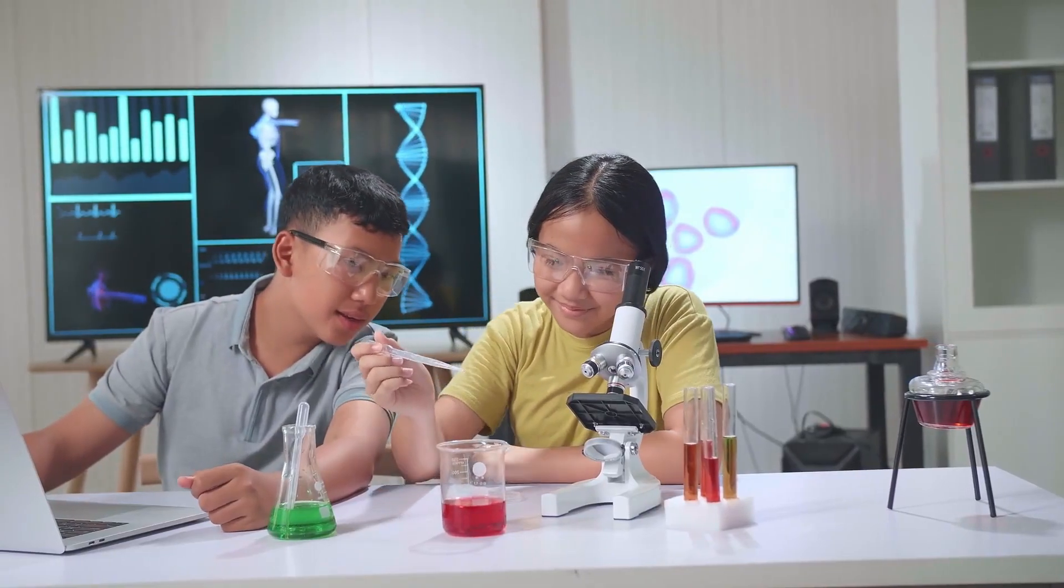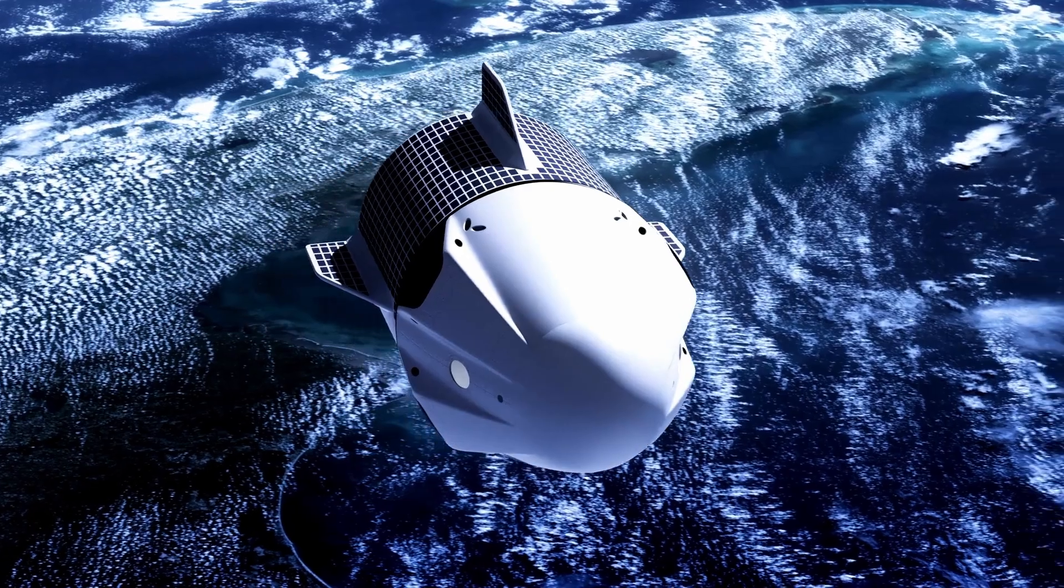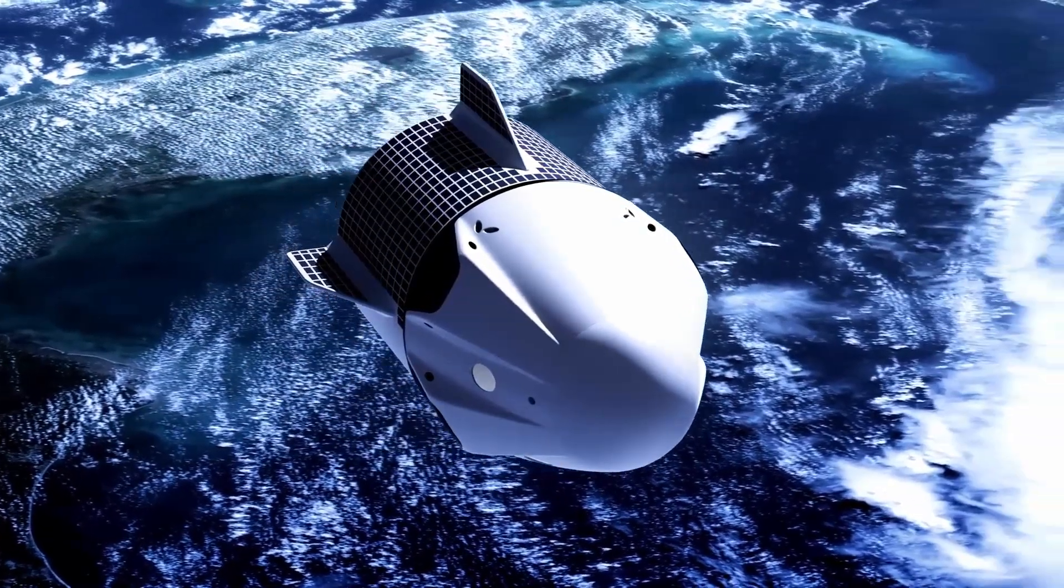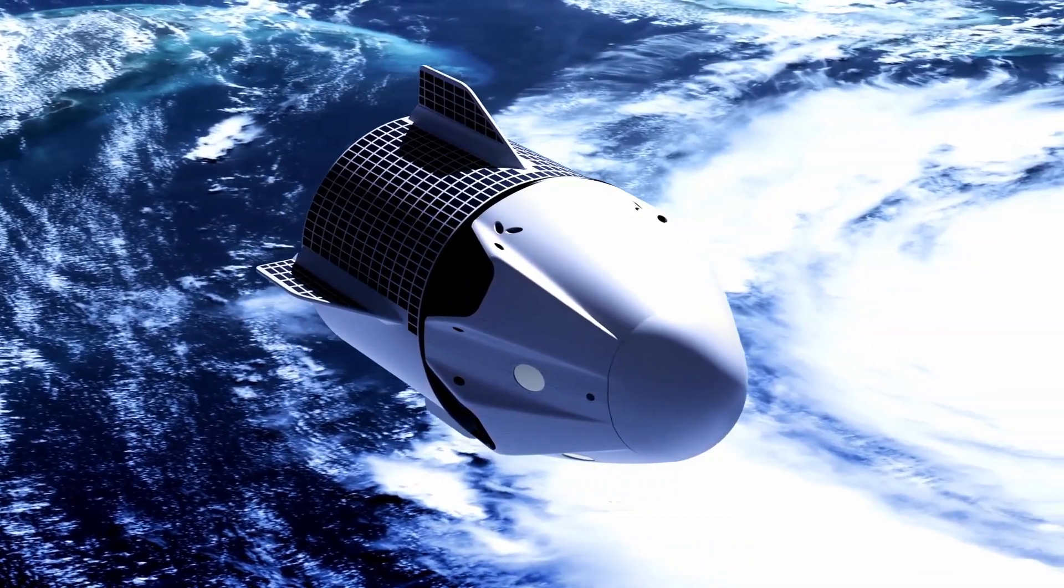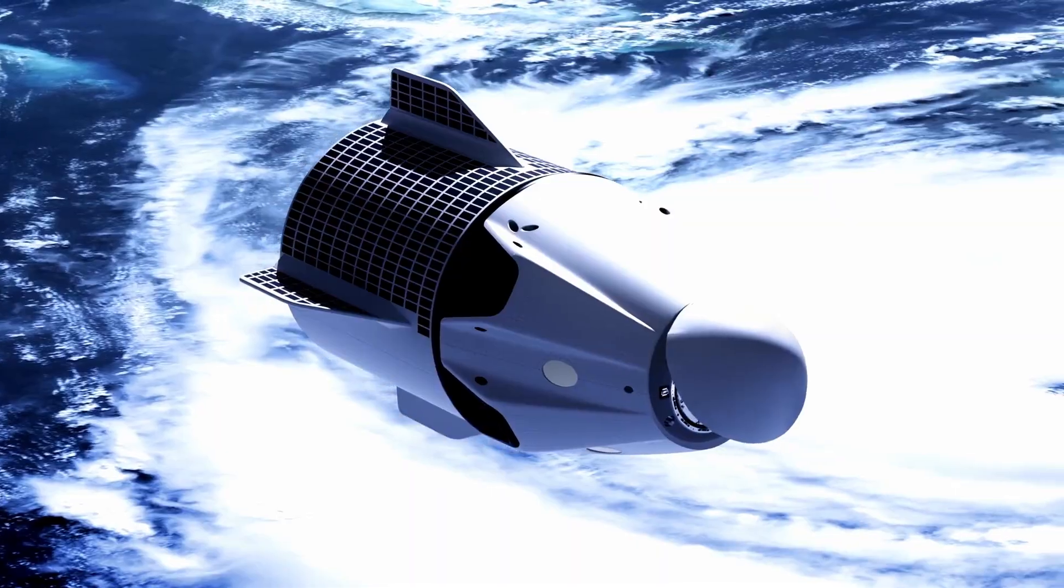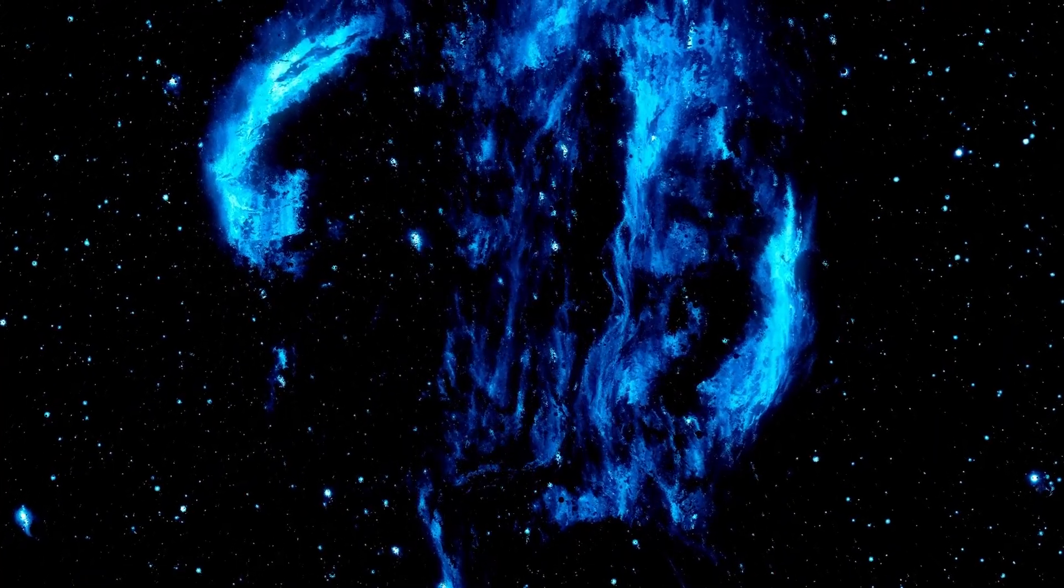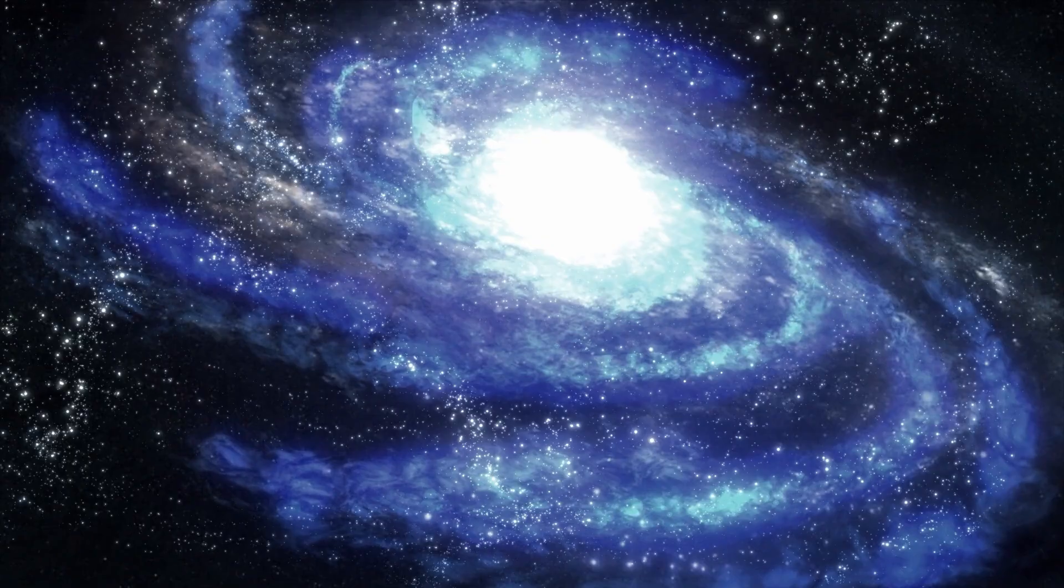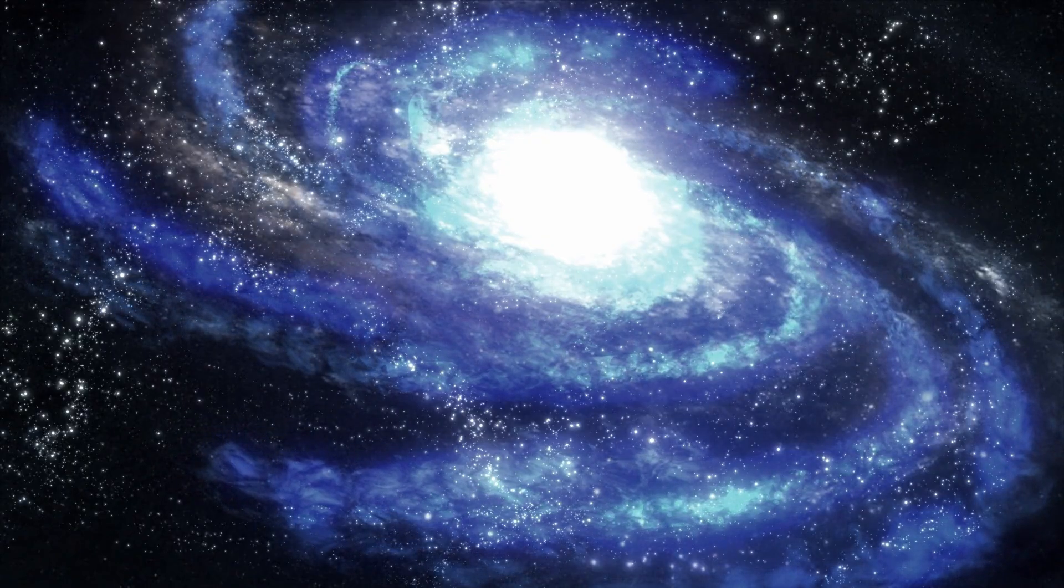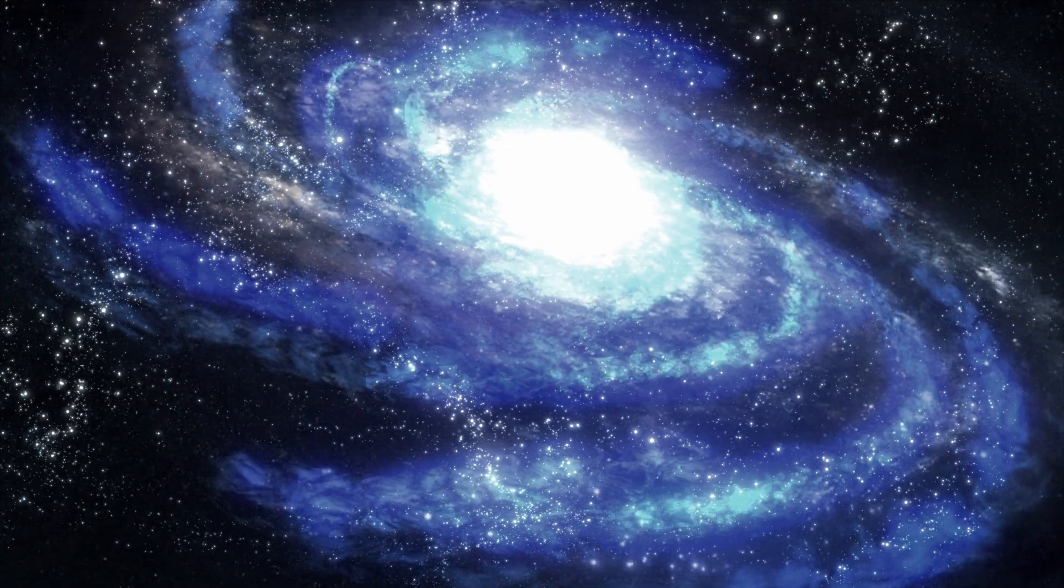That's not a minor uptick. It's a six-fold leap, the kind that turns a gentle magnetic breeze into a wall. For the Rosetta team, the surprise was immediate. One engineer caught on the mission voice loop called it a magnetic wall. The instrument scrambled to keep up as the plasma environment around 67P transformed almost overnight. This spike wasn't just a curiosity.